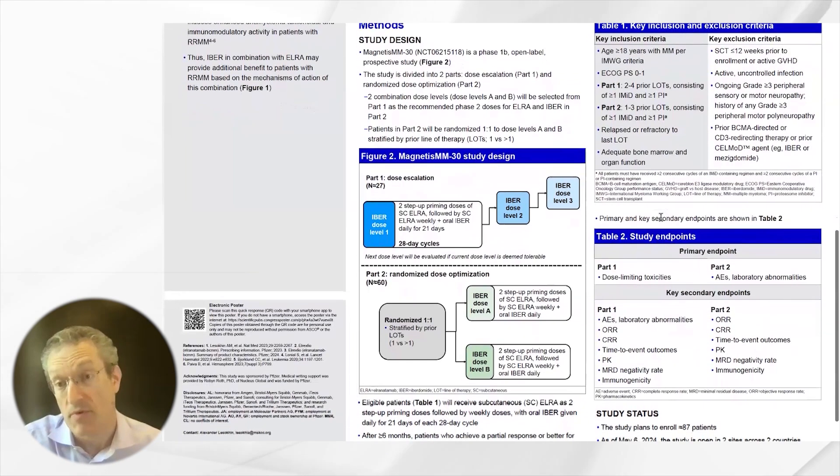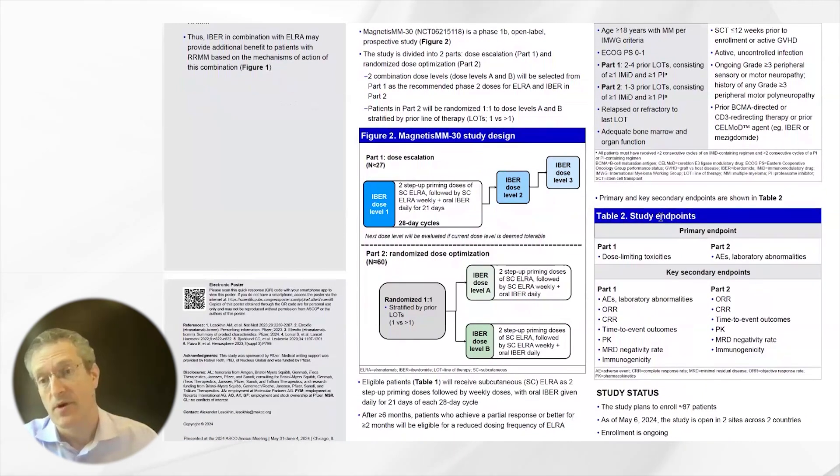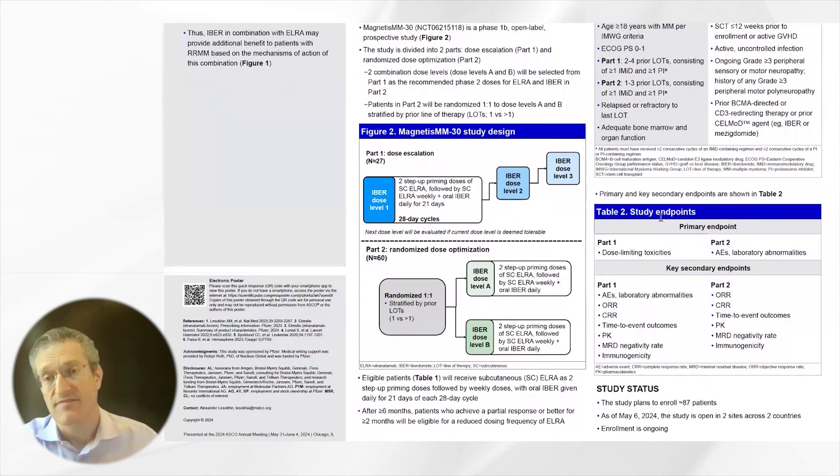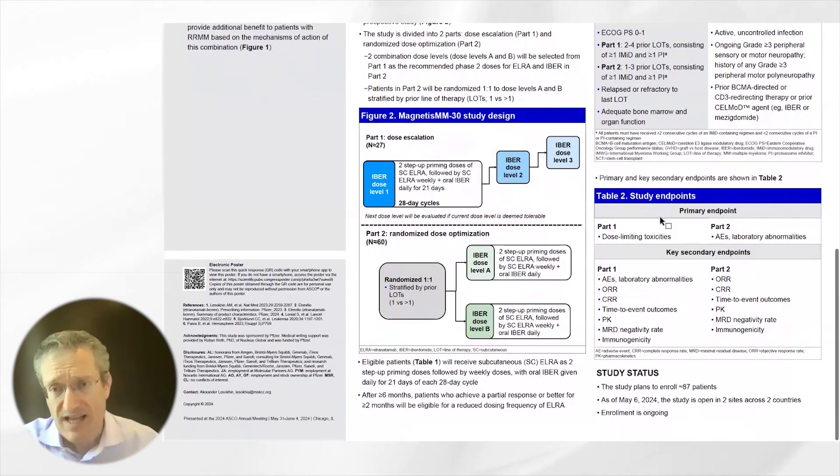The study endpoints for part one are to define the dose limiting toxicities, and for part two, the adverse effect profile and laboratory parameters. Key secondary endpoints include efficacy endpoints, pharmacokinetics, as well as MRD negativity.